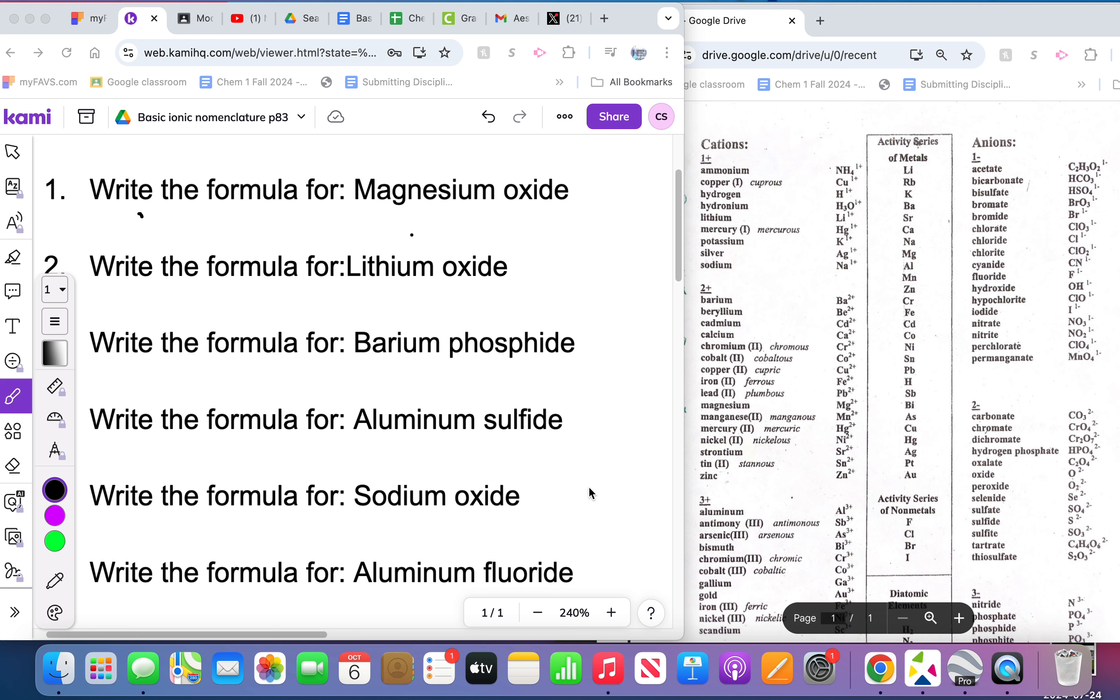So it's magnesium, you find that on the chart here and it's magnesium two positive. You write that down here, magnesium, and you put the two positive up here. Then you find the negative ion which is oxide, you find that and that's O with a two minus.